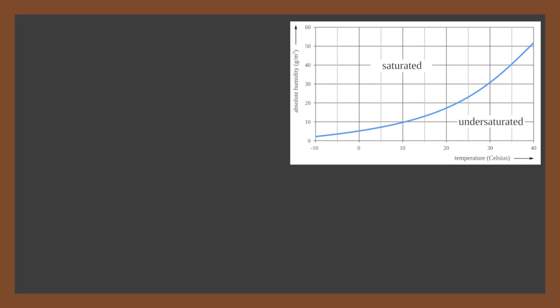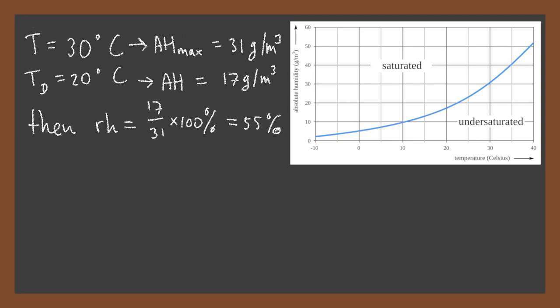Let's look at some numerical examples. First, let's determine the relative humidity. Suppose the temperature is 30 degrees. From the graph it follows that the maximum absolute humidity then is 31 grams per cubic meter. That means that if the absolute humidity would be 31 grams per cubic meter or higher, then the air is saturated and there is net condensation. Now further suppose the dew point is 20 degrees Celsius. Then from the graph you can read the absolute humidity, 17 grams per cubic meter. So the relative humidity equals 17 divided by 31 times 100% equals 55%.